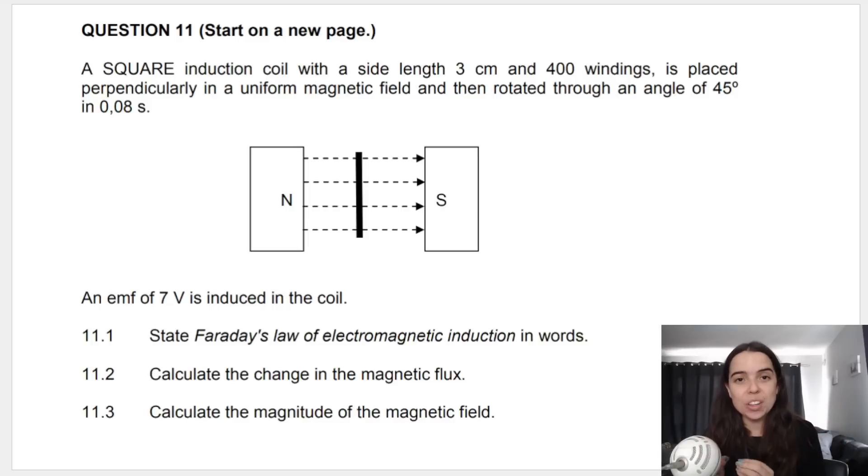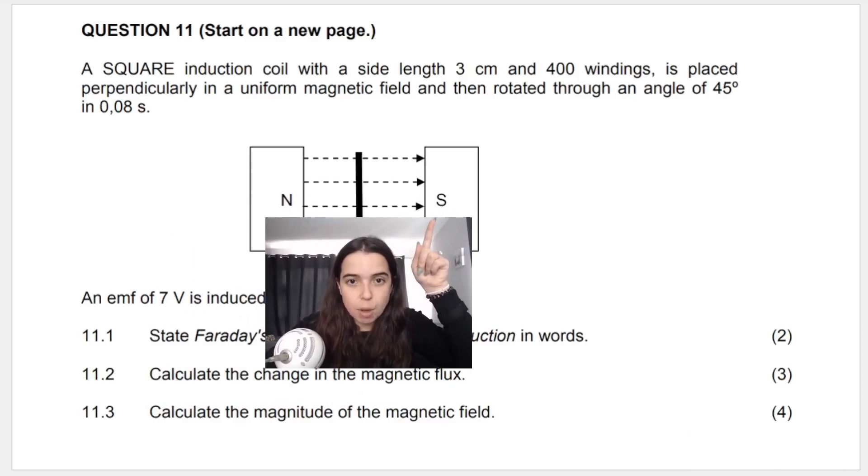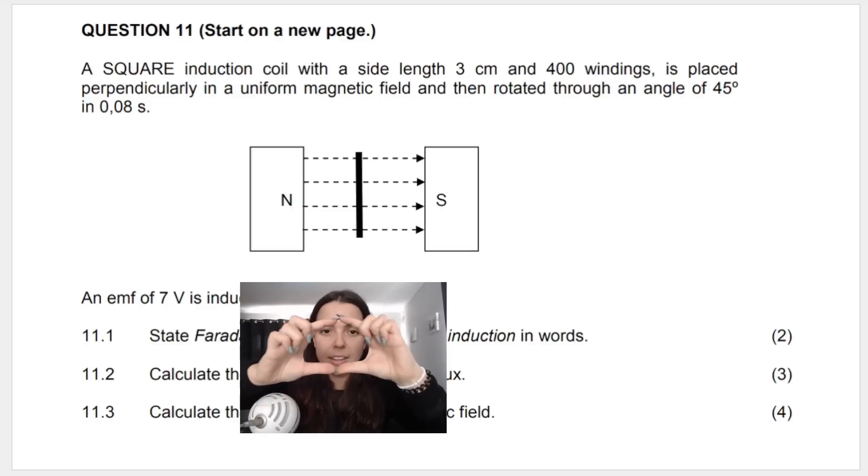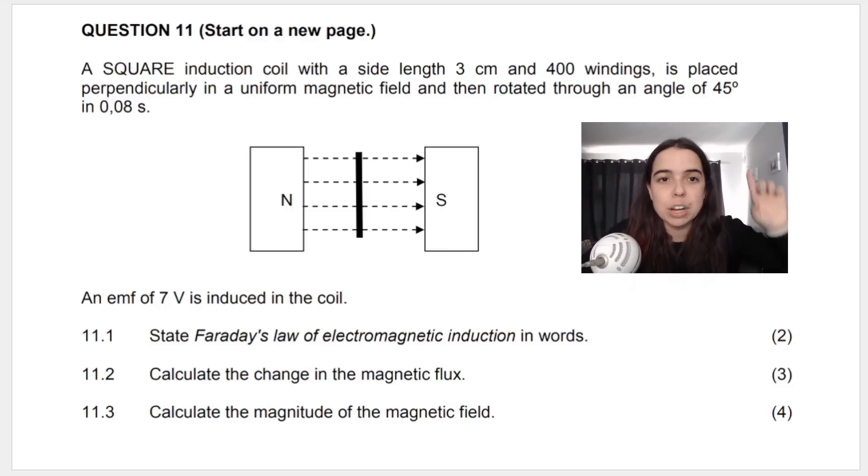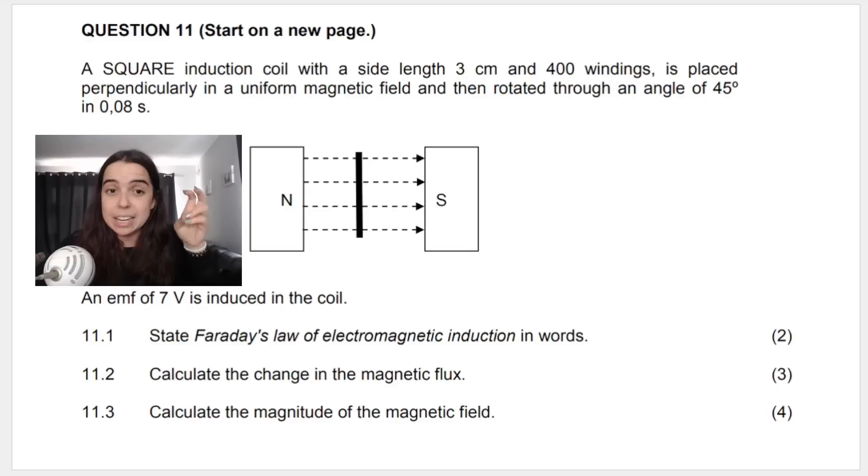We've got a square induction coil. When they say coil, they mean a conducting wire bent into a square. They give me the lengths of the sides, three centimeters. Obviously it's a square, so it's three by three. And it has 400 windings, so N is 400. It's placed perpendicularly in a uniform magnetic field. You can see by the picture what this looks like. Here's the north part of this magnet, south part, magnetic field lines going from north to south. This is the coil placed in the field. You're seeing it from a side view and it's rotated through an angle of 45 degrees in 0.08 seconds. An EMF of seven volts is induced in the coil.